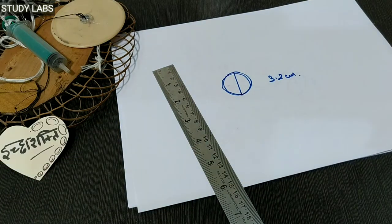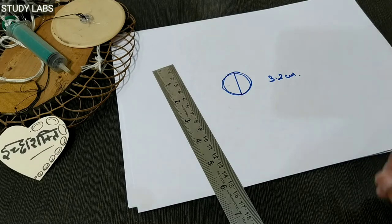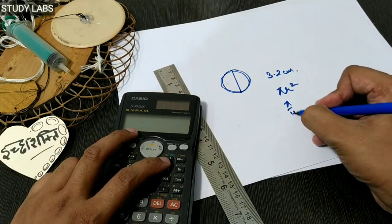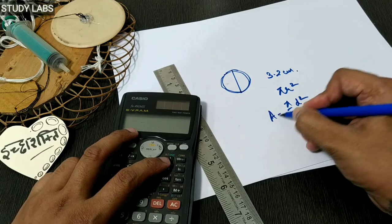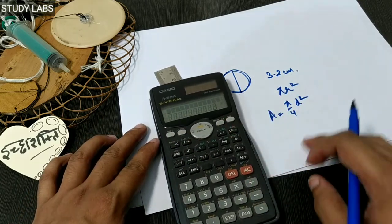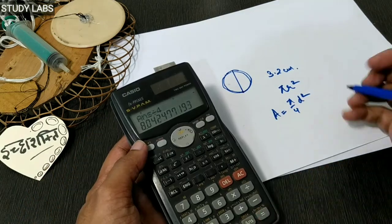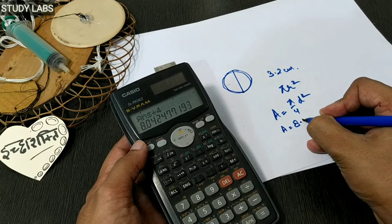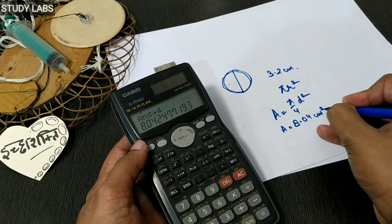Now when I have the diameter, I can calculate using pi r squared or pi by 4 d squared to find the area. The area is 8.04 cm².